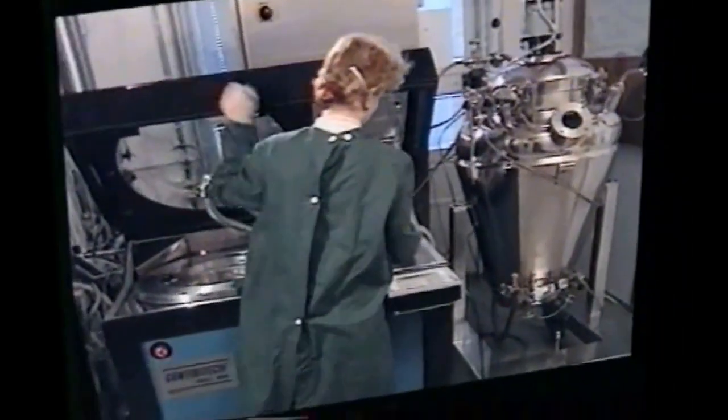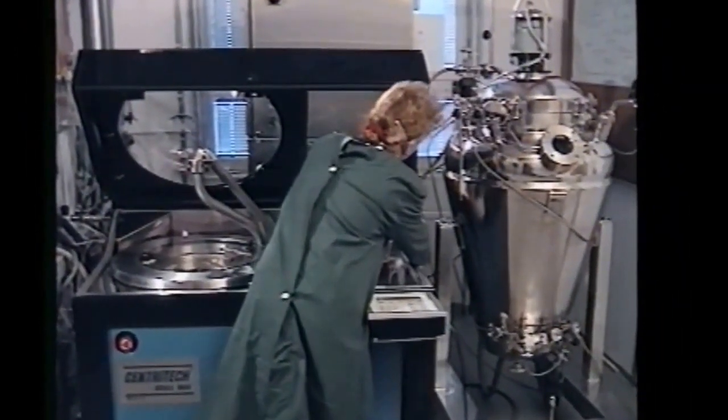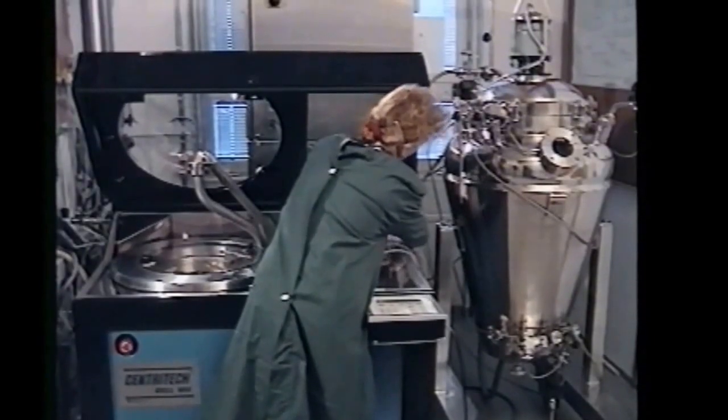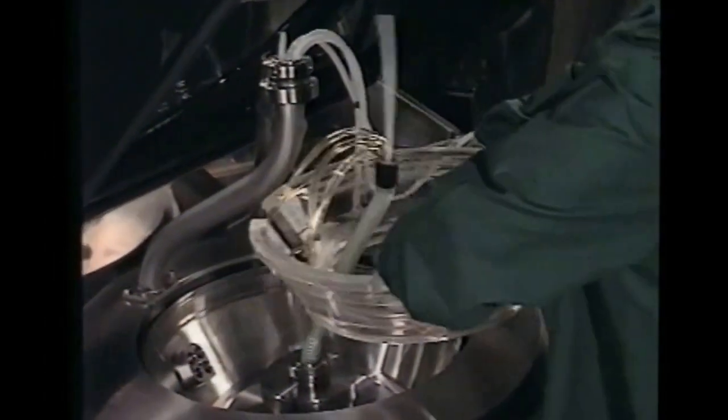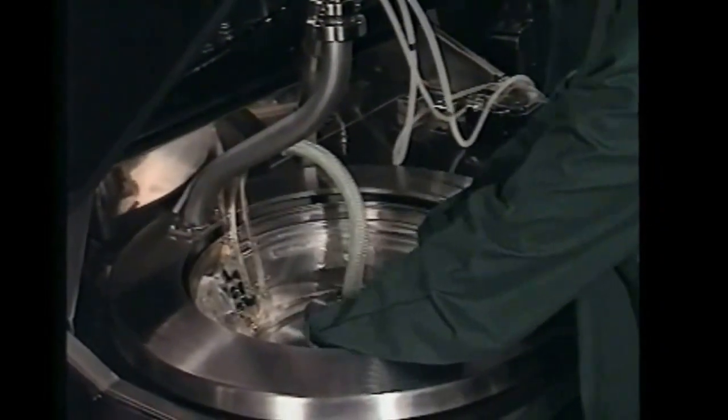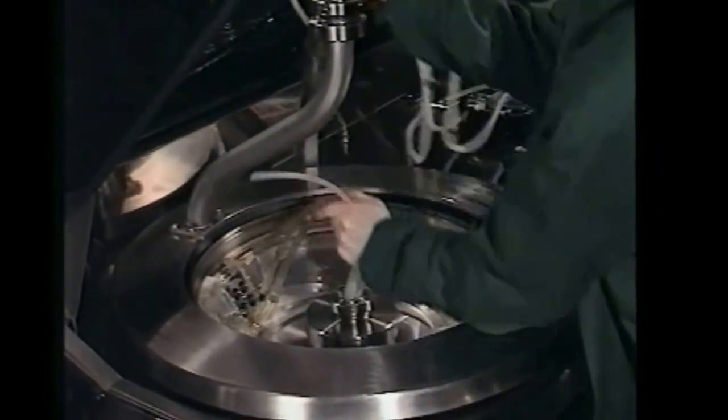When the separation process is complete, then the whole bladder and tube assembly can be removed and disposed of and a new assembly fitted. The process is then ready to start again, the whole turnaround taking only a few minutes.